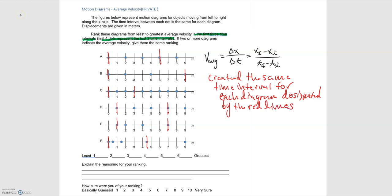Recall from the first average velocity example, when we have the same time interval, we just need to look at what the displacement is to be able to rank the average velocities, because for the same time interval, a larger displacement will give a larger average velocity.